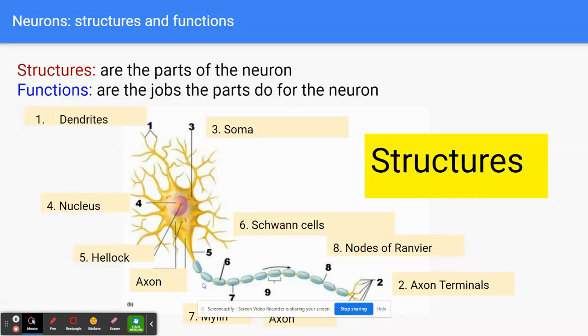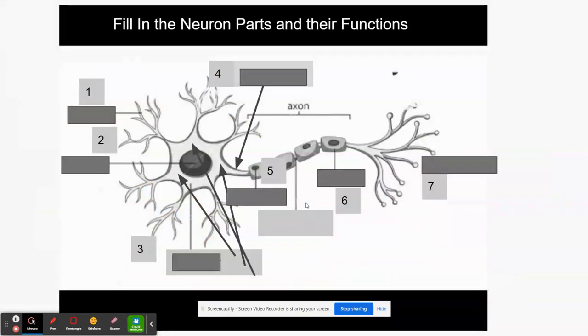The diagram labels appear to be misnumbered, so I'm not going to reference those numbers. What matters is that the structures are the parts of the neuron, and we're going to go through each part and talk about what those parts do.